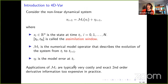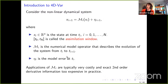We consider a nonlinear dynamical system where the xᵢ are vectors of length n, which will be very large, representing the state at times T₀ through Tₙ over the assimilation window. Mᵢ is the numerical model operator describing the evolution from time Tᵢ to Tᵢ₊₁, and eᵢ is the model error at time Tᵢ. Applications of the model operator are typically very costly, and exact second-order derivative information is too expensive to use in practice.